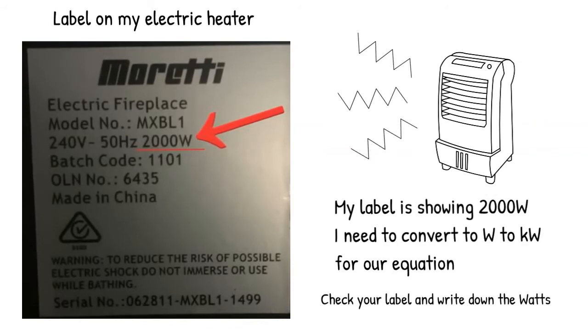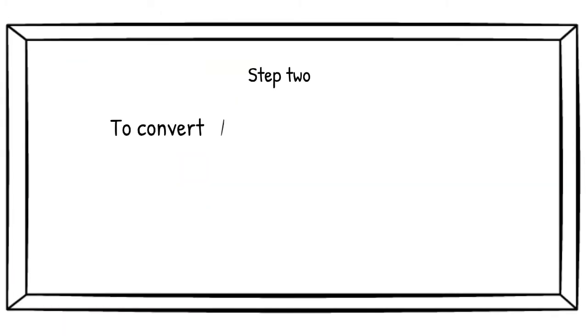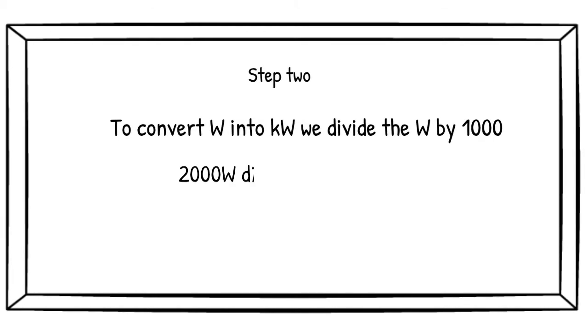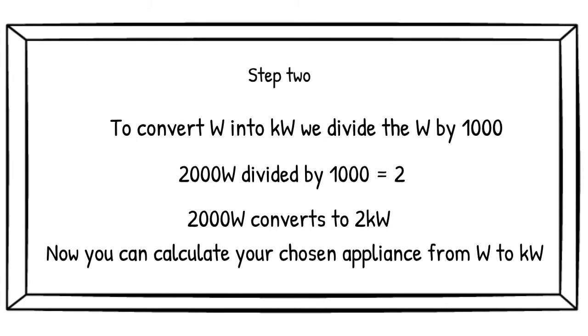I need to convert watts into kilowatts. To convert watts into kilowatts, you divide the watts by 1,000. So if we use my electric heater's watts as the example, we have 2,000 watts that I need to divide by 1,000. So 2,000 watts converts to 2 kilowatts because 2,000 divided by 1,000 equals 2.